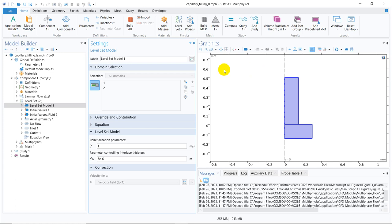And hence, you can see the parameter, the reinitialization parameter, which they are using is 1 meter per second. And the parameter which controls interface thickness is 5 micron for this particular case.